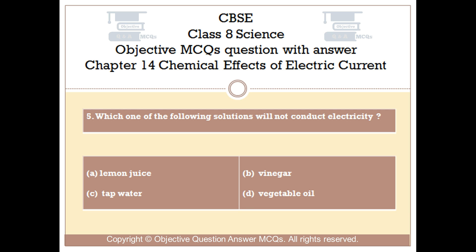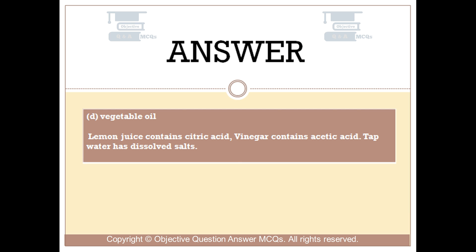The right answer is Option D — vegetable oil. Lemon juice contains citric acid, vinegar contains acetic acid, and tap water has dissolved salts, so all of these conduct electricity.